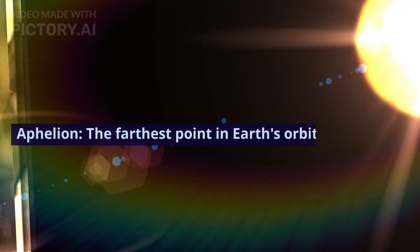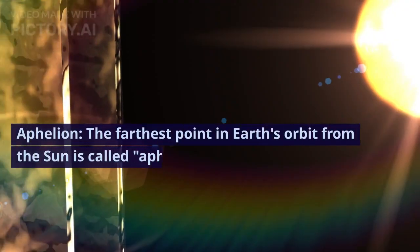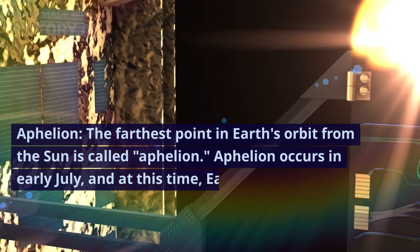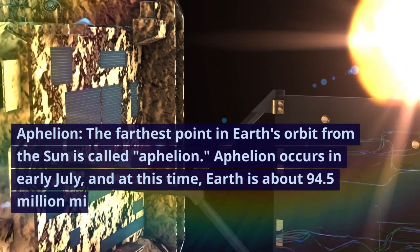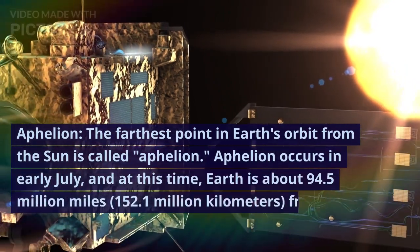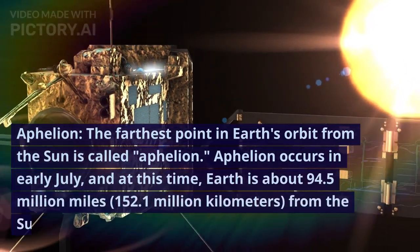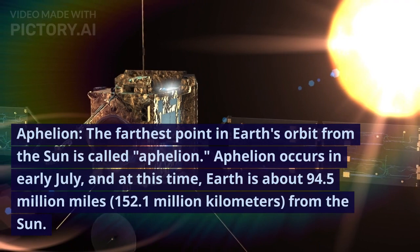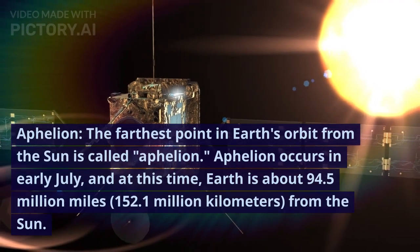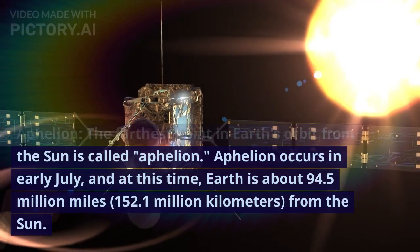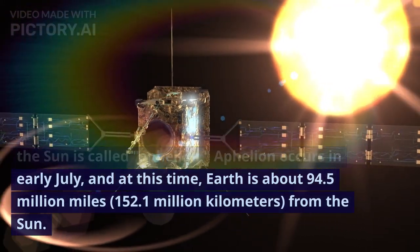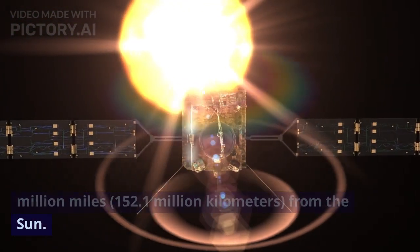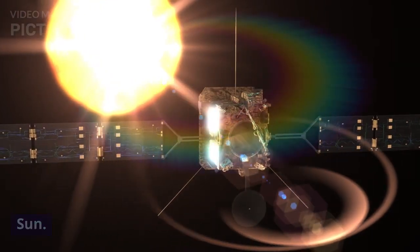The farthest point in Earth's orbit from the Sun is called aphelion. Aphelion occurs in early July, and at this time Earth is about 94.5 million miles (152.1 million kilometers) from the Sun.